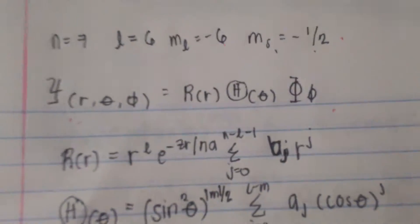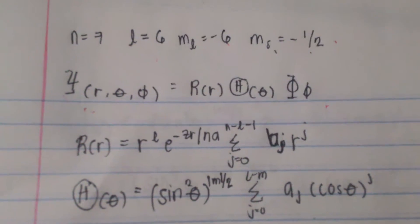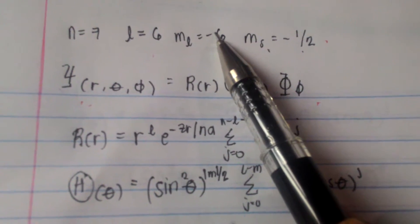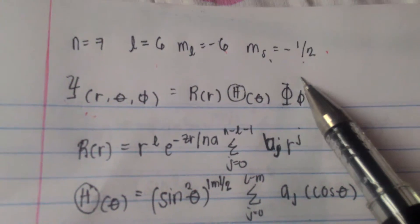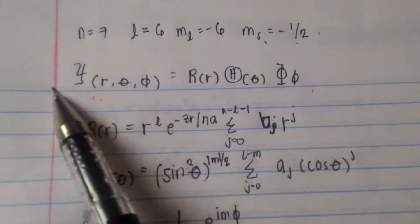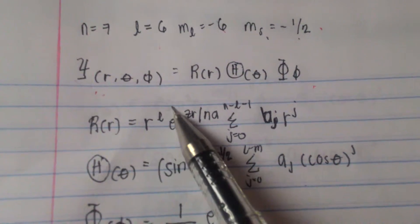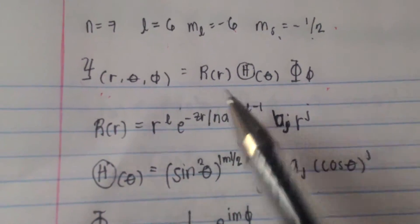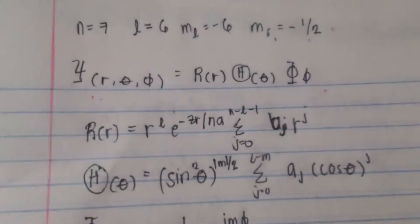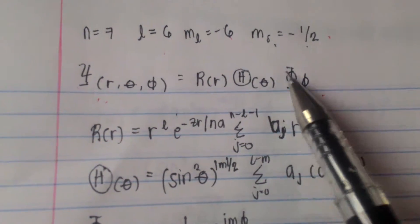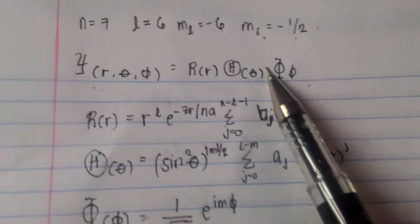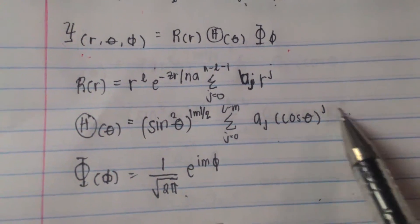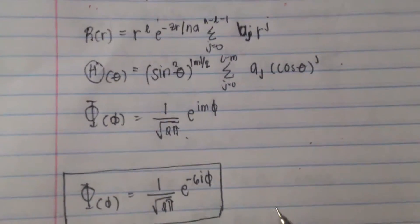Good day everyone. I will show you how to solve for the 7i orbital having an ml of negative 6 and an ms of negative 1.5. In order to get or solve for the wave function, we need to know first the value of the radial function and the harmonic functions. These are the formulas to get the values of these functions.